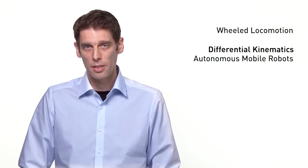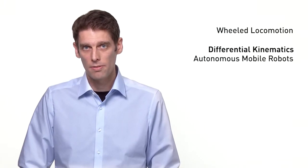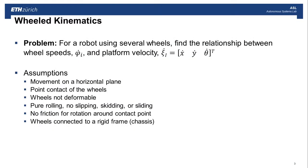Let's start by formulating the problem more specifically. The problem we'd like to address in this segment is, for a robot using several wheels, find the relationship between the speed of an individual wheel and the platform velocity. We're going to make some modeling assumptions. First, we'll assume that the robot moves on a flat horizontal plane.